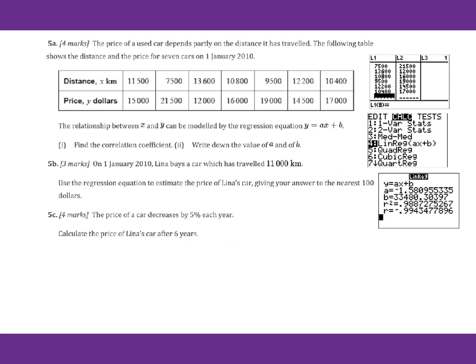Now let's go to 5a. First of all, we need to find the correlation coefficient and write down the value of a and b for this regression equation. We will put all data into L1 and L2. Then we go to calculator for linear regression ax plus b. We will get r equals negative 0.994, a equals negative 1.58. For b, remember three significant figures, so we can write down 33,500.